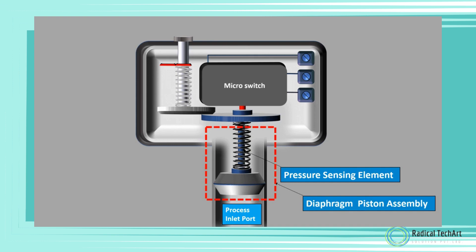Diaphragm piston assembly - the diaphragm along with the other sealing parts protects the internal parts of the switch from the process fluid. The type of diaphragm material is selected based on the type of fluid and its temperature.